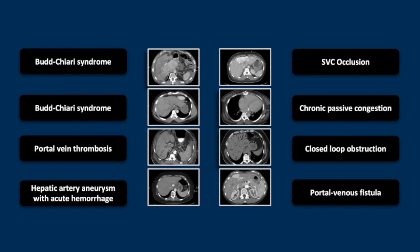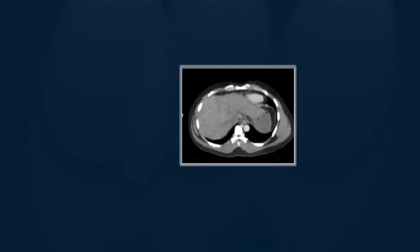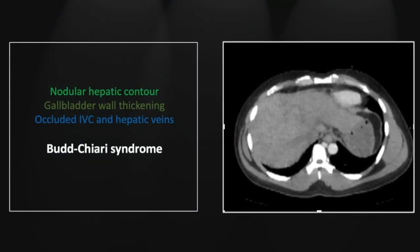Our next case is the more acute form of Budd-Chiari syndrome, usually related to hypercoagulability. There is heterogeneous parenchyma throughout the liver as well as a nodular contour. In addition, there is absence of the hepatic veins and IVC, which in this case are of normal size.